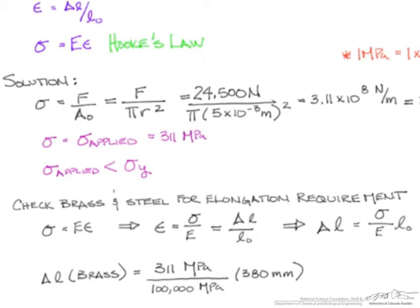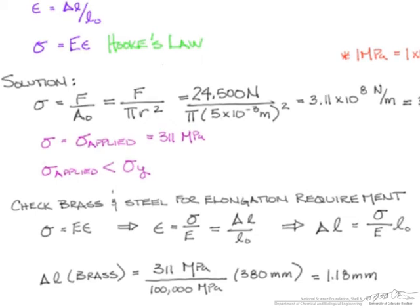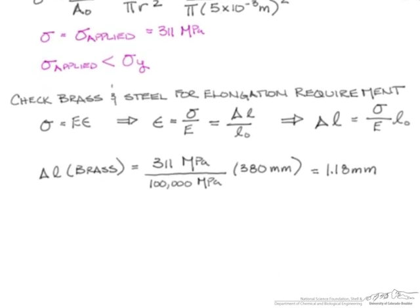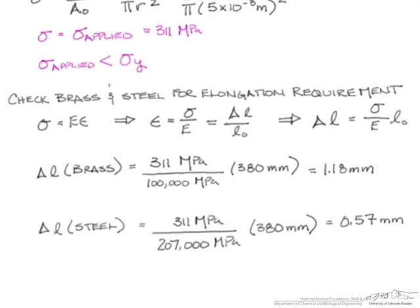And now we need to go ahead and calculate the elongation for steel. So, going through the same process, we'll move down and go ahead and calculate delta L for steel. Using the properties of steel, we have 311 megapascals over 207,000 megapascals.